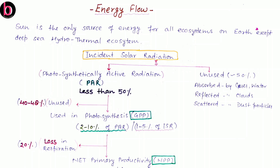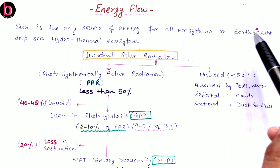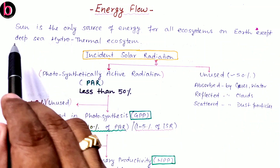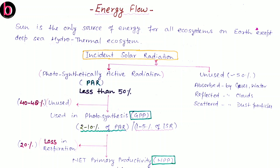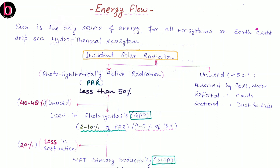Before discussing energy flow, we need to know about the source of energy. The sun is the only source of energy for all ecosystems on Earth. There is one exception: the deep sea hydrothermal ecosystem, at great ocean depths where sunlight cannot penetrate due to scattering. Organisms there use chemical energy — they are chemosynthetic organisms, acting as producers like plants. Examples include hydrogen bacteria, iron bacteria, and sulfur bacteria.